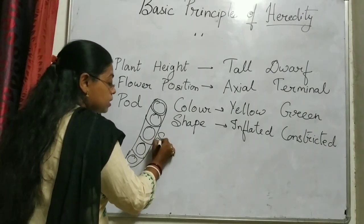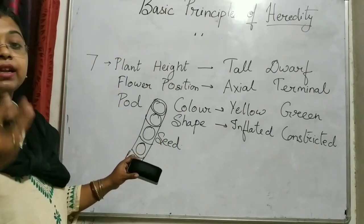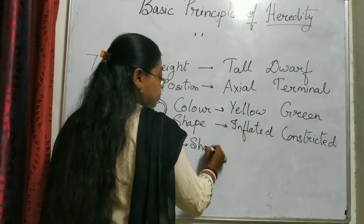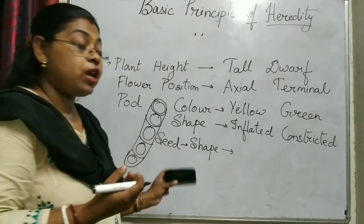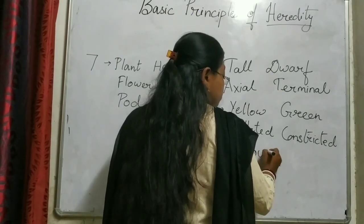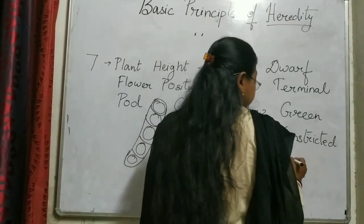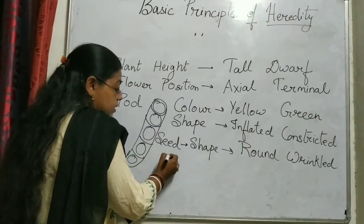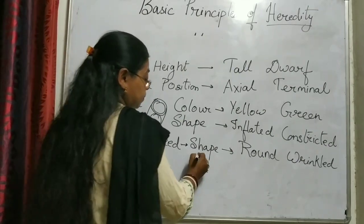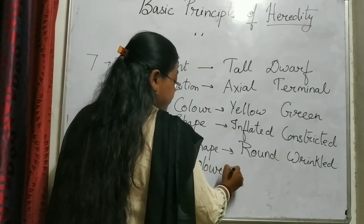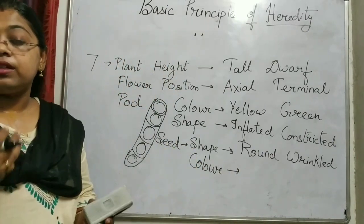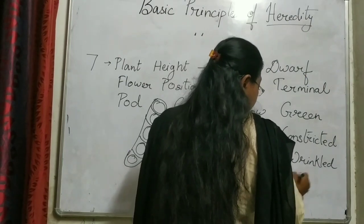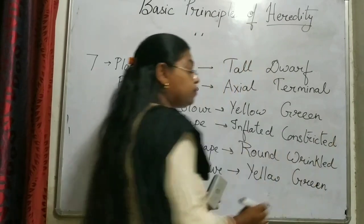The next character is the seed. In the seed, there are 3 characters. The first is seed shape — the shape of the seed is round or wrinkled. Next is seed color, which means the color of the endosperm. The seed color can be yellow and green — two contrasting characters.